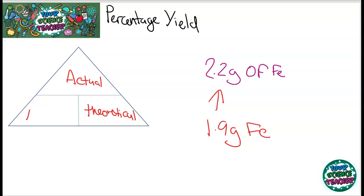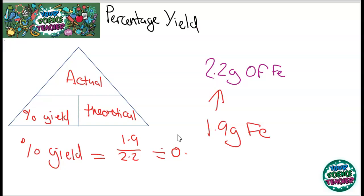Let's do that for this reaction. The percentage yield equals 1.9 divided by 2.2, which equals 0.86. Then to turn it into a percent, you times it by 100, which equals 86%.